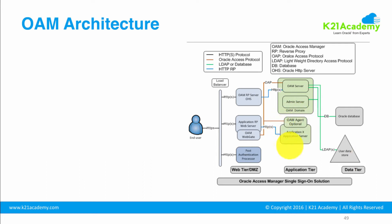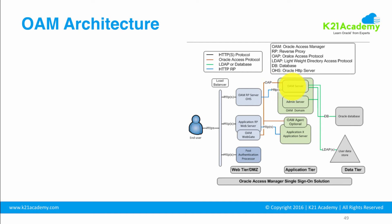This block represents the application you are trying to protect or configure single sign-on against, and you can have a number of such applications. You put a web server in front of the application working as a reverse proxy, and on this web server you put a policy enforcement point or gatekeeper called WebGate. The role of WebGate is that any request that comes to the web server, the WebGate will collect the URL, take it to Oracle Access Manager, and ask what authentication mechanism to use — meaning which login page the user should be redirected to. Once the user enters their username and password, those are submitted to Oracle Access Manager.